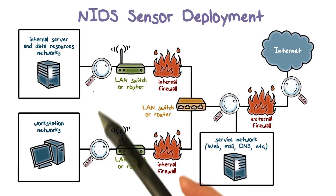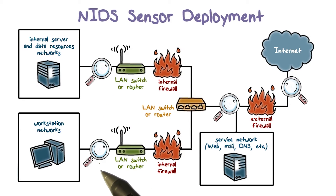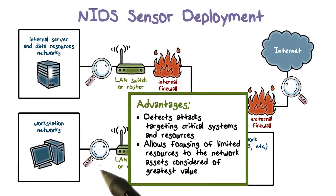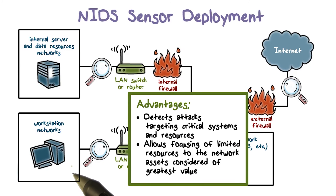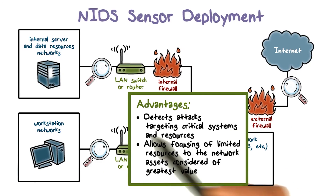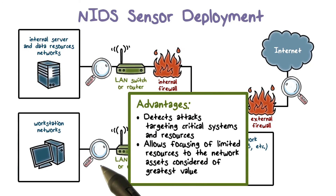In addition to protecting the servers, a network IDS can also be placed to protect the workstations or networks of important personnel or departments. A network IDS at this location can focus on targeted attacks — for example, attacks that are targeted at financial transaction systems. Compared with an IDS at the network perimeter, which must examine traffic to the whole network, an IDS at this location can instead focus on traffic to these high value systems.